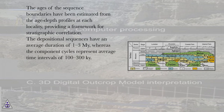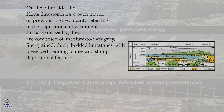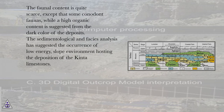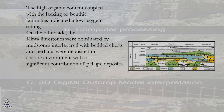On the other side, the Kinta limestones have been the subject of previous studies, mainly referring to depositional environments. In the Kinta Valley, they are composed of medium to dark gray, fine-grained, thinly bedded limestones with preserved bedding planes and slump depositional features. The faunal content is quite scarce, except for some conodont faunas, while a high organic content is suggested from the dark color of the deposits. The sedimentological and facies analysis has suggested the occurrence of a low-energy slope environment hosting deposition of the Kinta limestones. The high organic content coupled with the lack of benthic fauna has indicated a low-oxygen setting. The Kinta limestones were dominated by mudstones interlayered with bedded cherts and were perhaps deposited in a slope environment with a significant contribution of pelagic deposits.